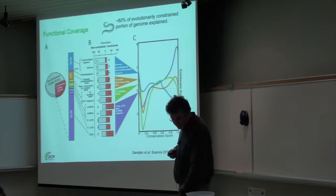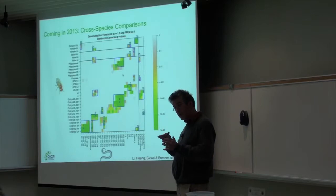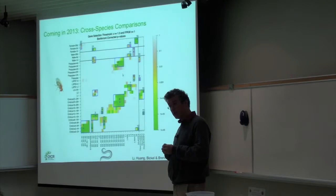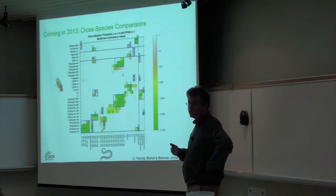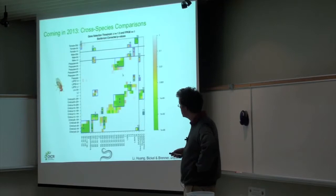Since the publications, the datasets have grown, and there's going to be another series of publications coming out in early 2013. The highlight will be comparative functional genomics between worm and fly on the one hand, and between those two invertebrates and human and mouse on the other, using the ENCODE datasets.